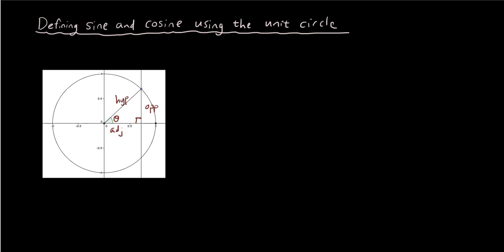Now according to the three standard trigonometry ratios, we have sin θ equals opposite over hypotenuse, cos θ equals adjacent over hypotenuse, and tangent θ equals opposite over adjacent.